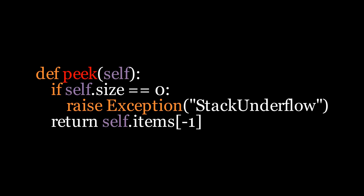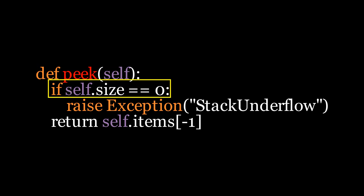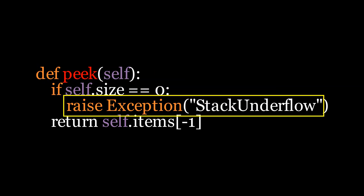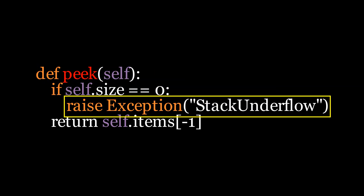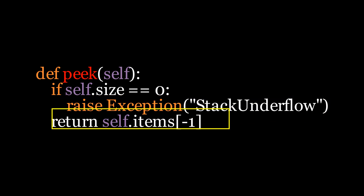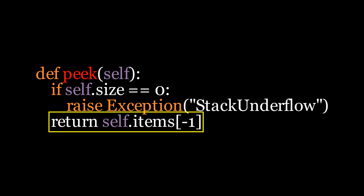There's also a peek operation that returns the top element without modifying the stack. We'll start by defining the peek method. First, it checks if the stack is empty. If it is, it raises a stack underflow error. Otherwise, it simply returns the top element without removing it from the stack.